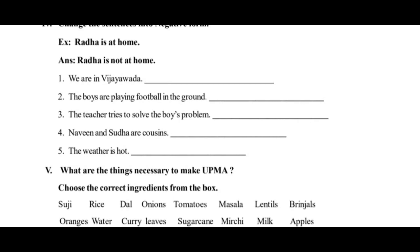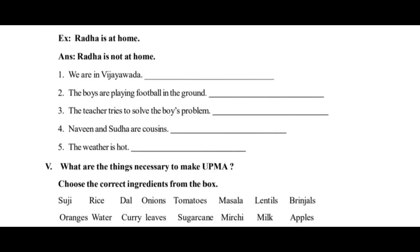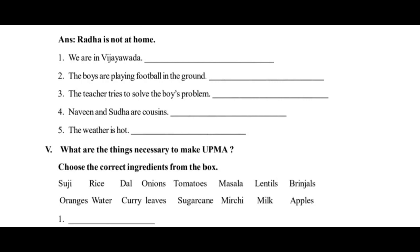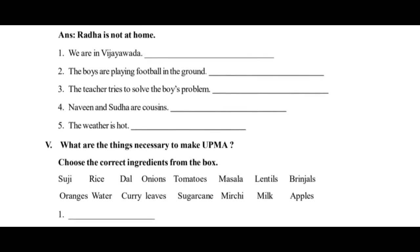First one: 'We are in Vijayawada.' Negative: We are not in Vijayawada — 'not' added after 'are.' Second one: 'The boys are playing football in the ground.' Negative: The boys are not playing football in the ground. Third one: 'The teacher tries to solve the boys' problem.' Negative: The teacher does not try to solve the boys' problem — 'tries' becomes 'does not try.'